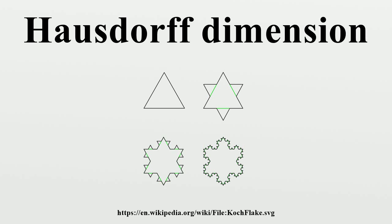Formal definitions. Hausdorff content: Let X be a metric space. If S ⊆ X and D ∈ [0, ∞), the D-dimensional Hausdorff content of S is defined as the infimum of the set of numbers δ ≥ 0 such that there is some collection of balls covering S with radii r_i > 0 for each i that satisfies the given condition.